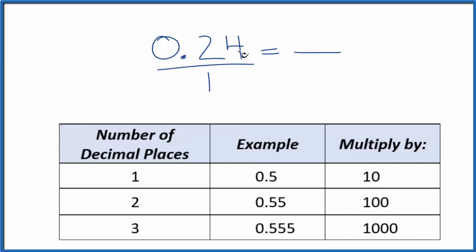It's still 0.24, but now we have the start of fraction form. Since we have 2 decimal places, we're going to multiply the top and the bottom by 100, like this.